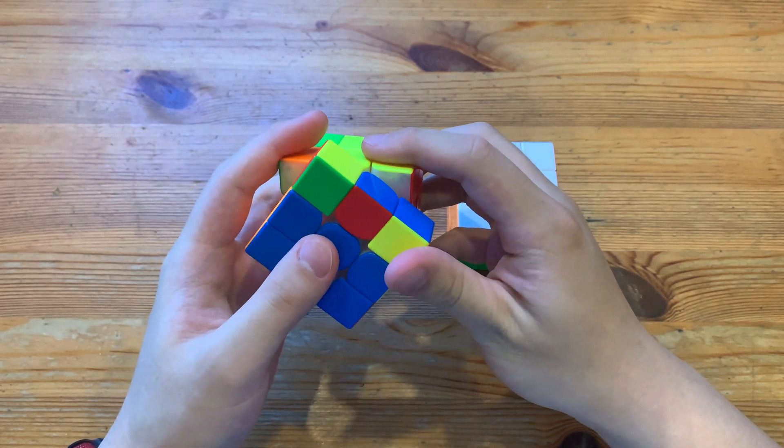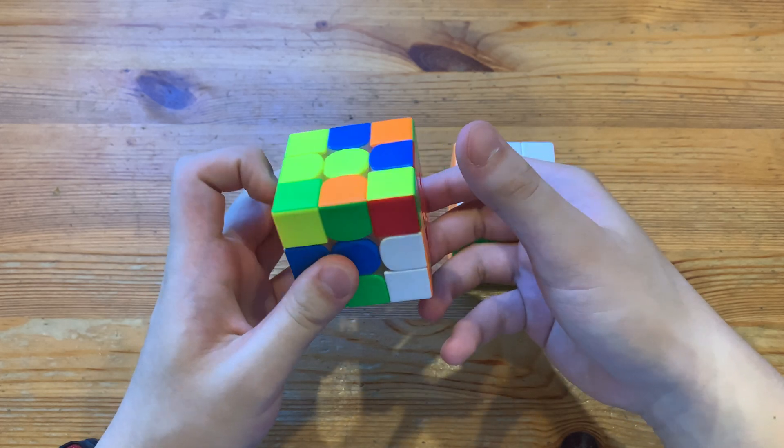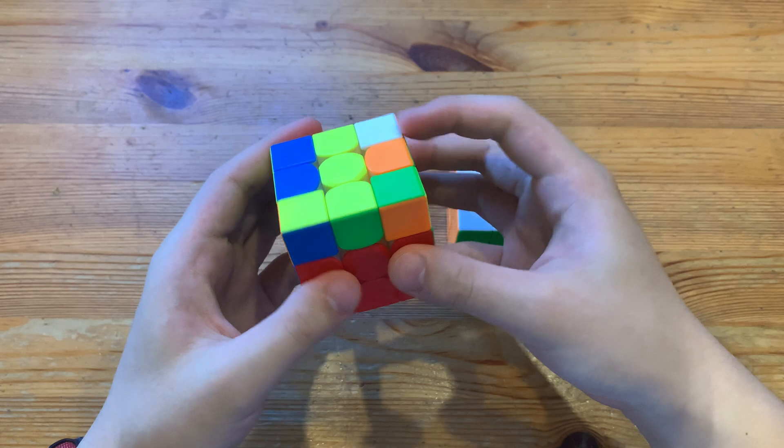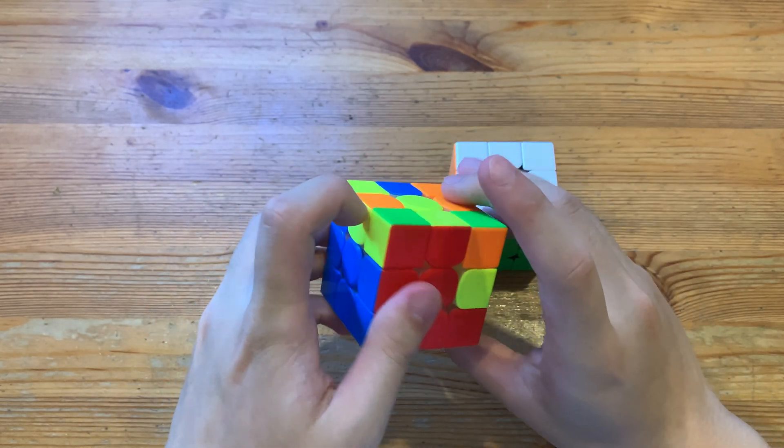And once I get here, I know that this will be a keyhole pair, so we'll just go right into it. And then here, I'll do d2, u at the same time, and then rotate, solve it into the back, right?